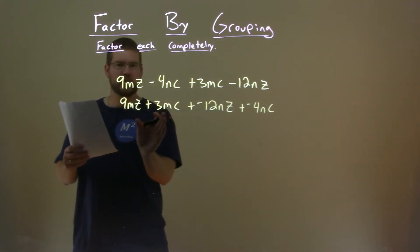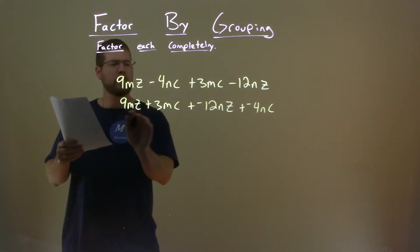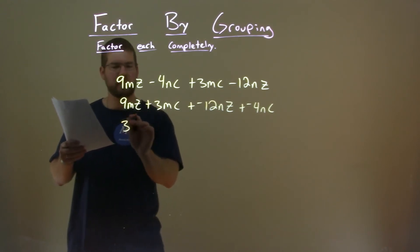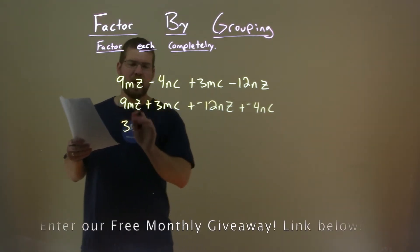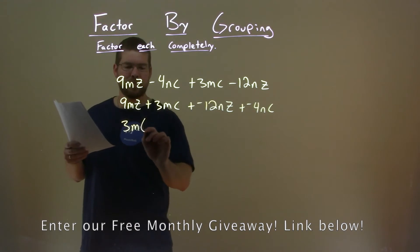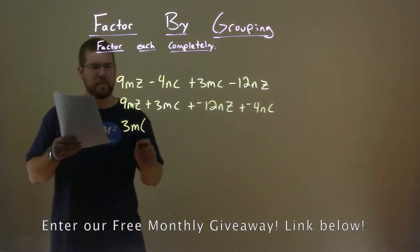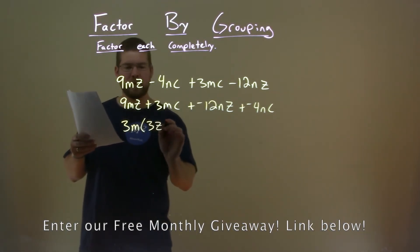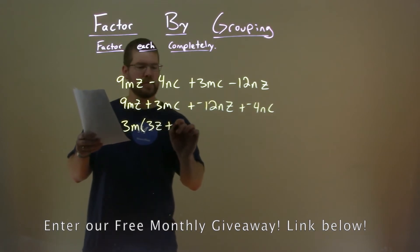So now we're going to pull out a like term here. The first half here, both of them have a 3. 3 goes into 9, 3 goes into 3, and they both have an M in them. If I pull out a 3M, I'm left with a 3Z plus, well, just 1C.